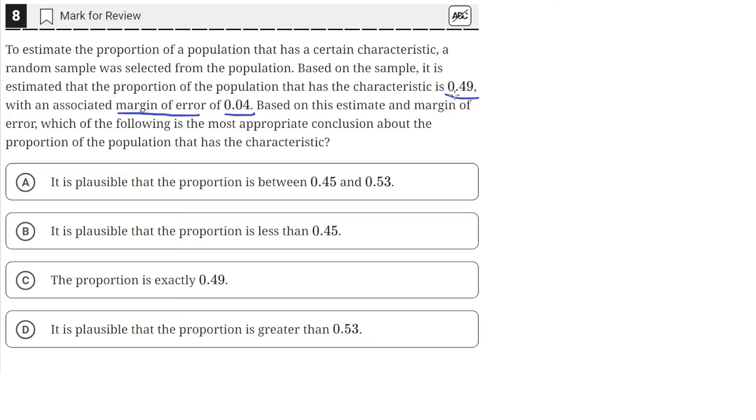So the proportion of the population with the characteristic is 0.49, but there is a margin of error of 0.04. This means that the interval for plausible values of the proportion of the population that has a characteristic will be 0.04 less than the 0.49 and 0.04 greater than 0.49.